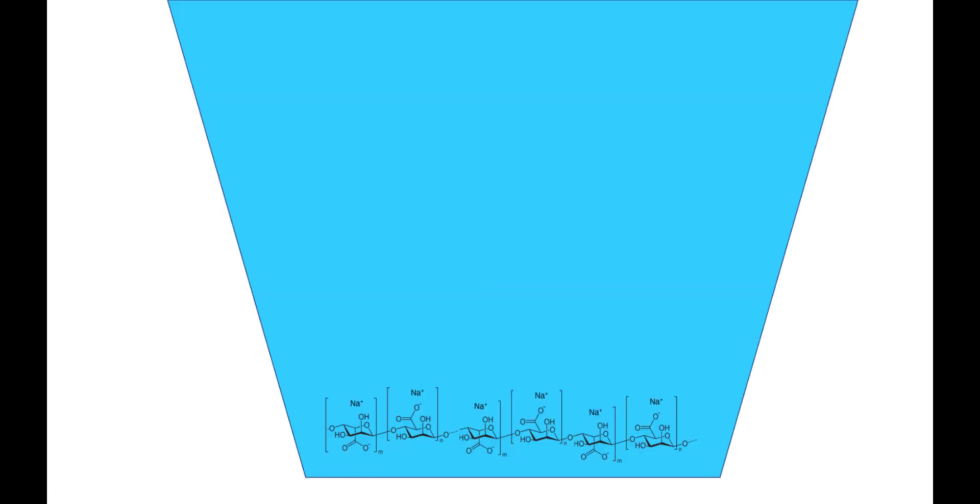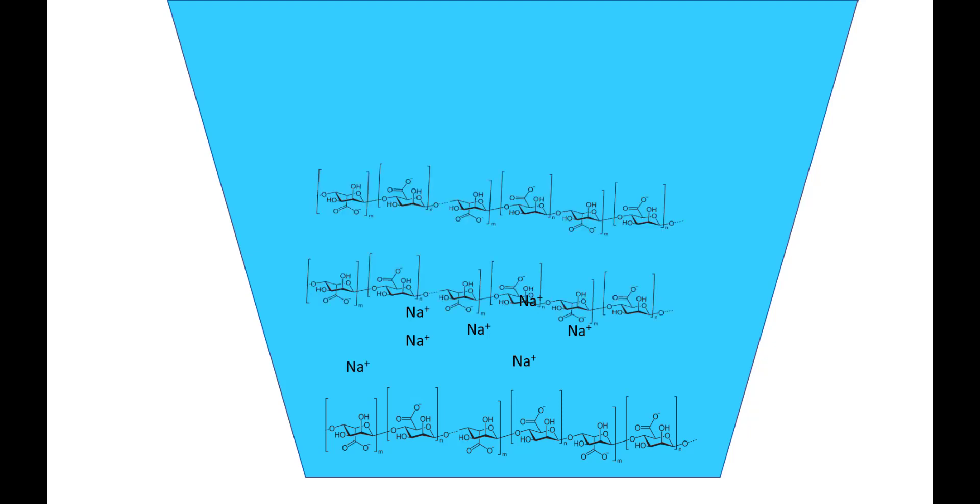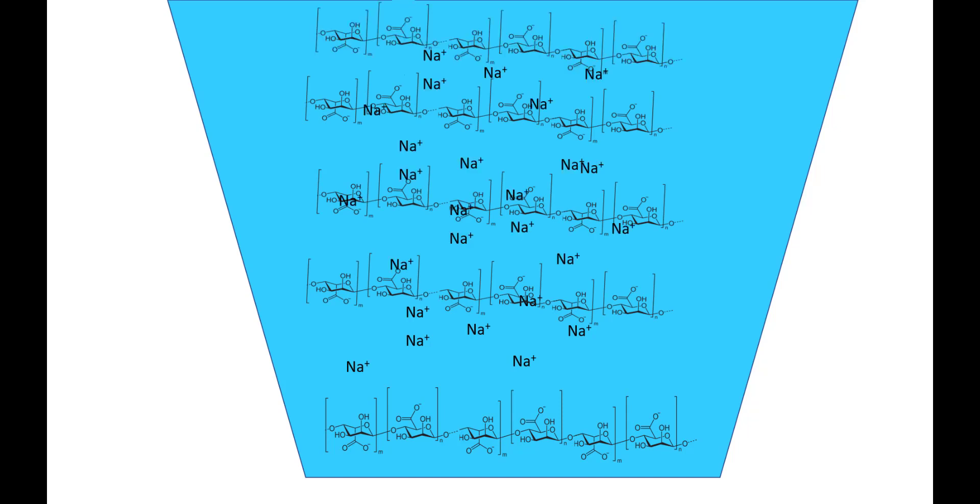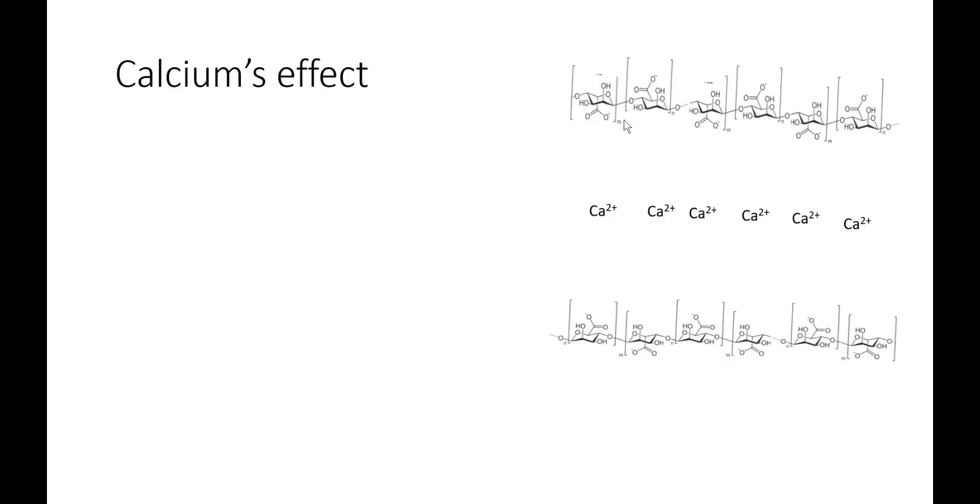Initially, just like salt, some dissociation occurs. The sodium and the anionic alginate actually move apart from one another, stabilized by the polarity of the water. As we continue to add more and more alginates, the solution will become a little bit thicker, kind of like adding sugar to water. The viscosity increases.